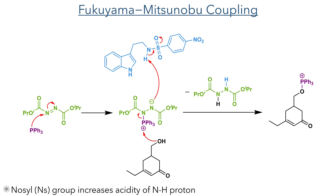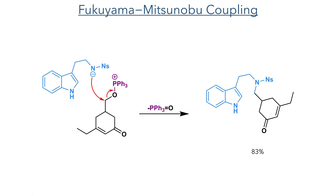This deprotected alcohol could then take part in a Fukuyama-Mitsunobu coupling. DIAD is first attacked by triphenylphosphine and the resulting anion can then deprotonate the nosyl-protected amine. The nosyl protecting group consists of a nitrosulfonamide, which is very important for this reaction as it is very electron-withdrawing, increasing the acidity of the NH proton. Without increasing the acidity of this proton, amines cannot take part in a Mitsunobu reaction. Together with this deprotonation, the triphenylphosphonium moiety is attacked by the hydroxyl group, eliminating the reduced DIAD by-product to form the activated oxygen species. The negatively charged nitrogen can then attack this centre, eliminating triphenylphosphine oxide to form the nitrogen-carbon bond in an 83% yield.